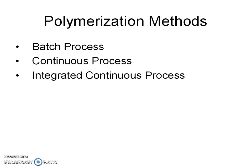For production of nylon, the polymerization of caprolactam on an industrial scale is carried out by three methods: batch process, continuous process, and integrated continuous process. We shall be seeing only the batch process in this tutorial.